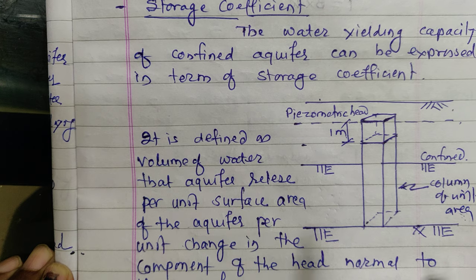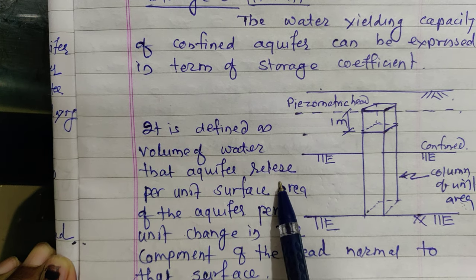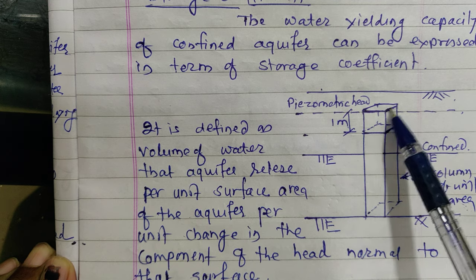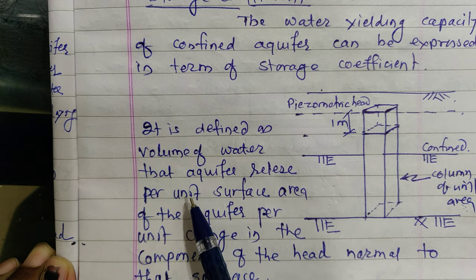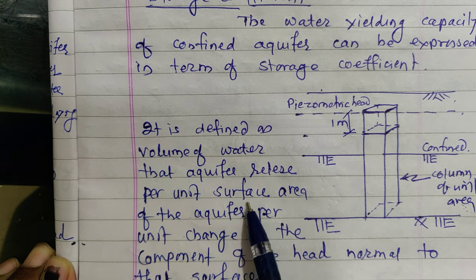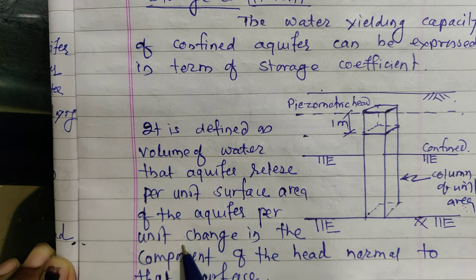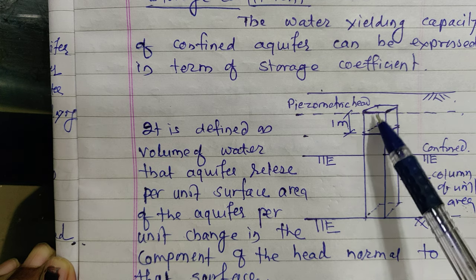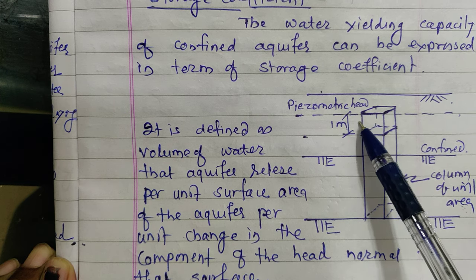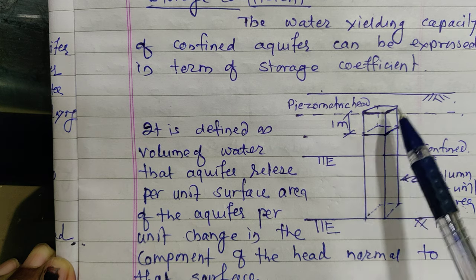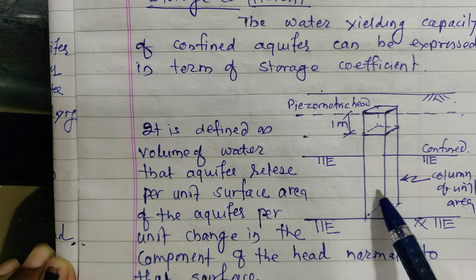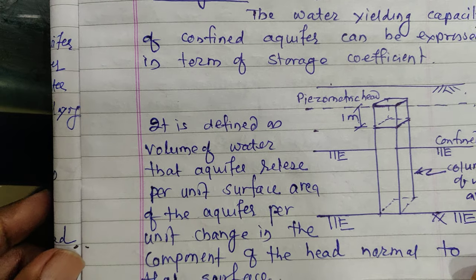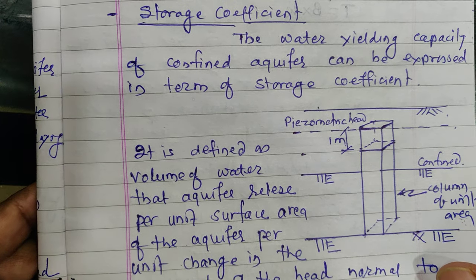Storage coefficient is defined as the volume of water that an aquifer releases per unit surface area of the aquifer. Considering a one-meter by one-meter unit area: by reducing the head by one meter, the volume of water obtainable from the aquifer is the storage coefficient. This definition is important for competitive examinations.